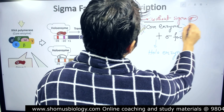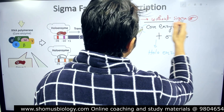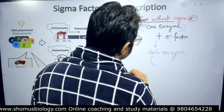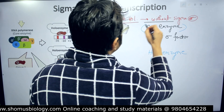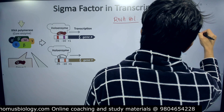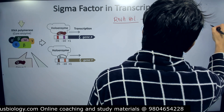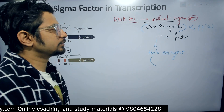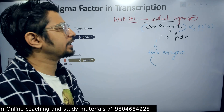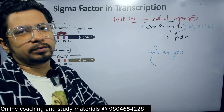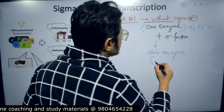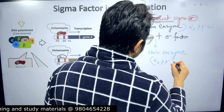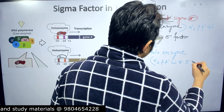Without sigma factor we have the core enzyme; with sigma factor we have the holoenzyme. The core enzyme itself has two alpha units, one beta unit, one beta prime unit, and one omega unit — five units in total. In the holoenzyme, we have all of these plus the sigma subunit.